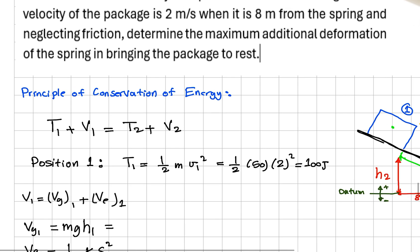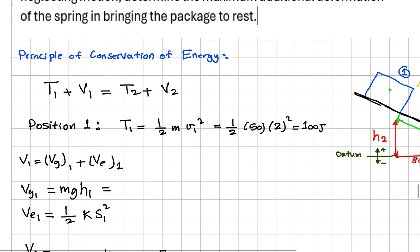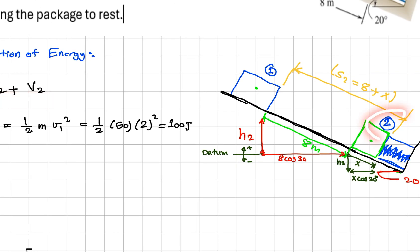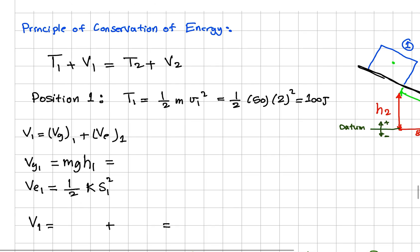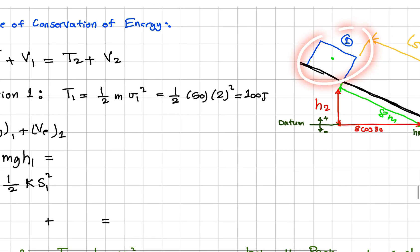Having this, we're going to use the principle of conservation of energy. We have the kinetic plus potential energy at point 1 equals the kinetic and potential energy at point 2. Between point 1 and point 2, we're going to apply the conservation of energy principle.